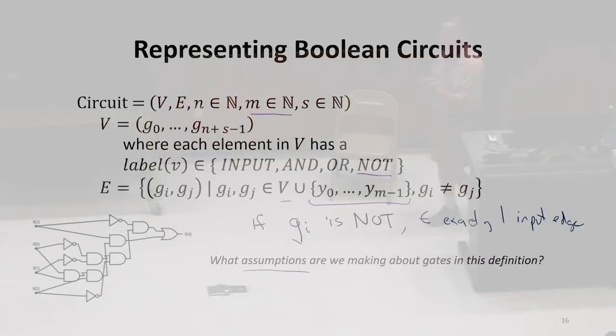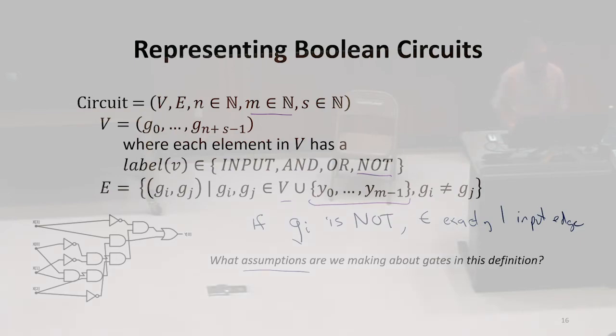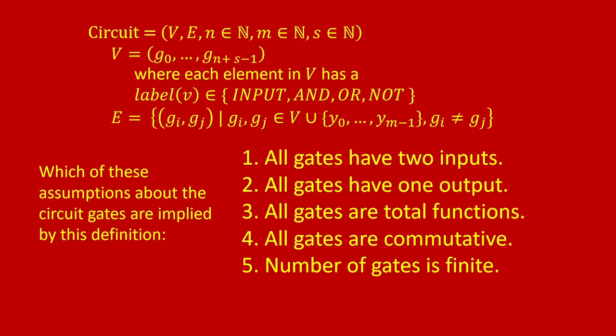What about circuits we might want to represent that we can't represent with this? This definition assumes a lot about the kinds of gates we can have. I've listed five possible assumptions that this definition might or might not imply. When I ask does it imply this assumption, that means: if that assumption doesn't hold, does the definition still make sense? Is there something about the definition that without that assumption breaks in some very bad way? That would mean it's implicitly assuming those things.